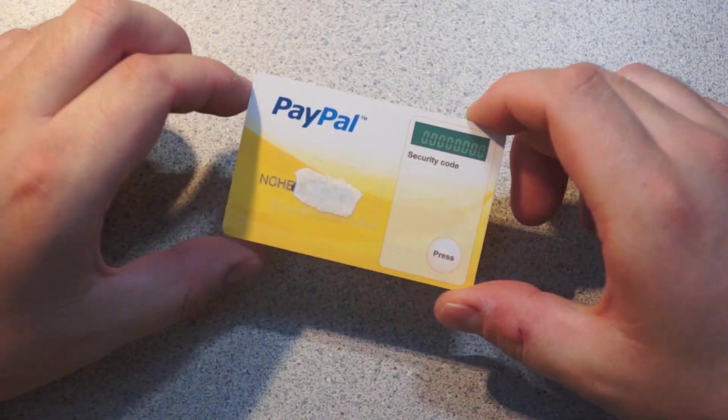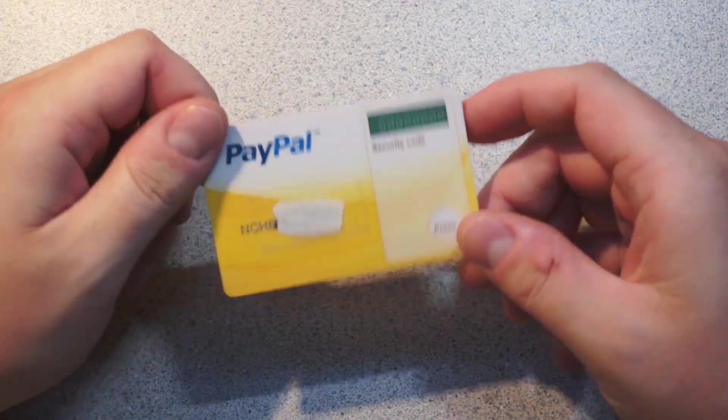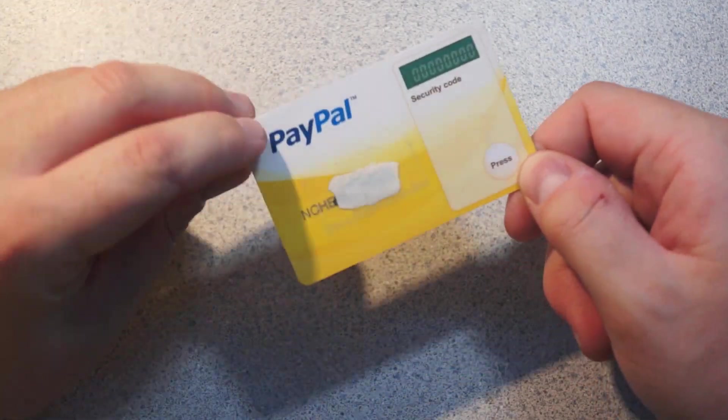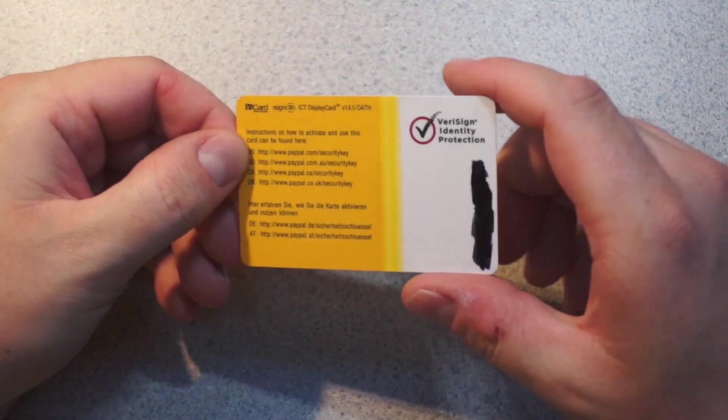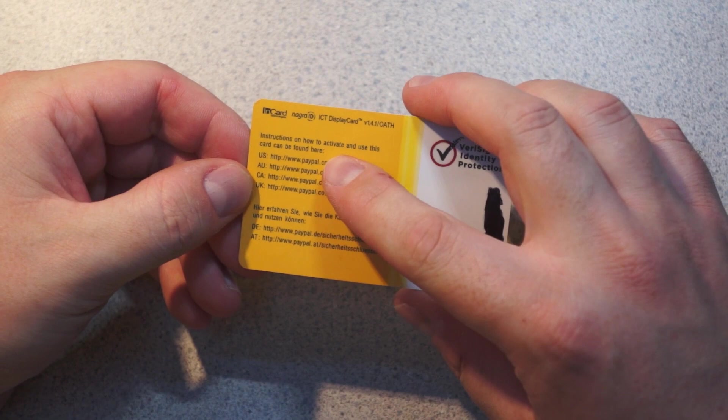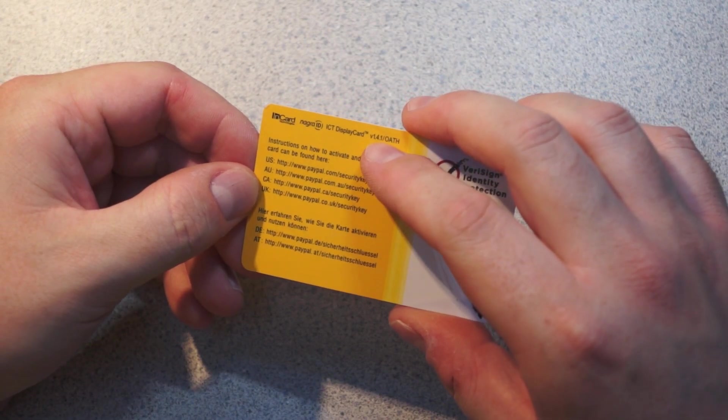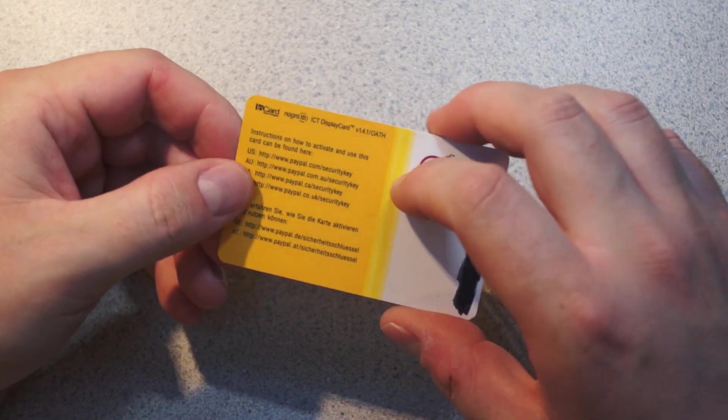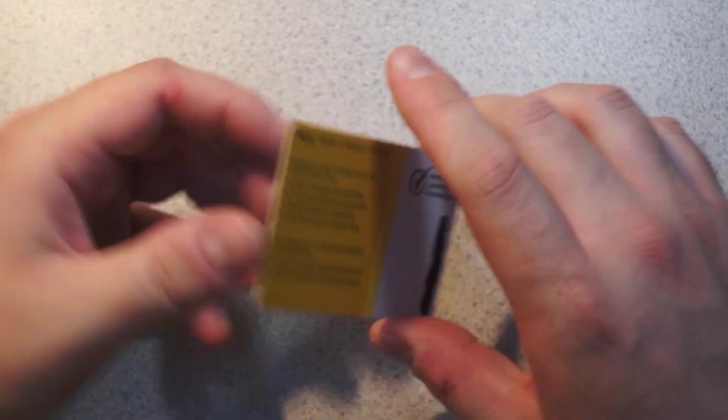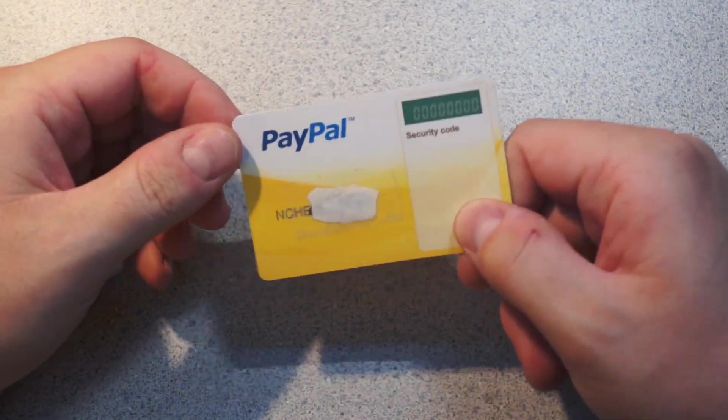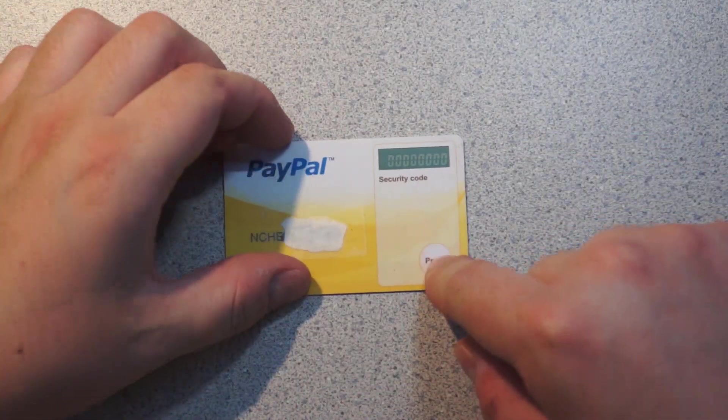So this may be interesting. What I have here is a PayPal security token. This is actually a VeriSign produced card - it's a Laotian card, I believe. What this is, is basically a one-time key generator.